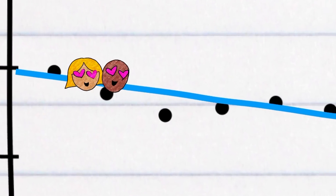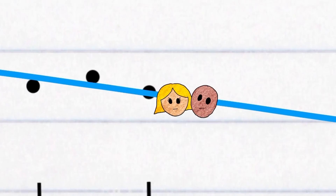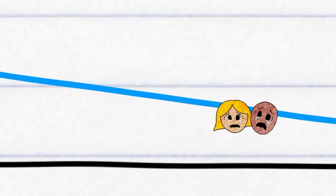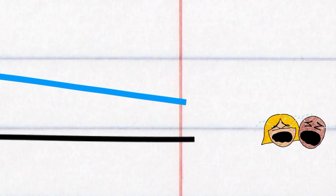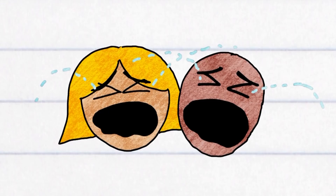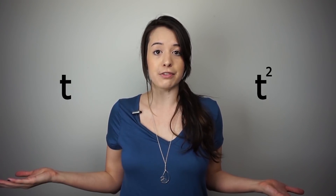It captures the basic trend, but misses a lot of the data points. And if we follow it for long enough, we'll see that couples become infinitely miserable the longer they stay married, which doesn't sound quite right. So if we tried to capture a more complex but slightly more accurate relationship between time and happiness, we could take two factors into account, like time and time squared.